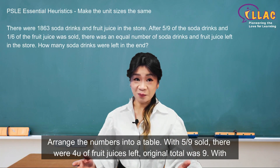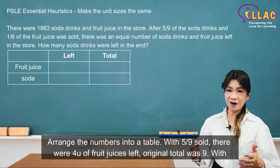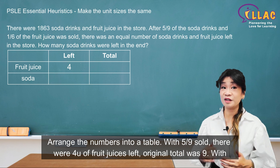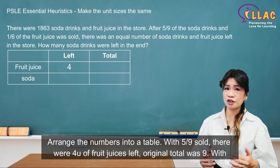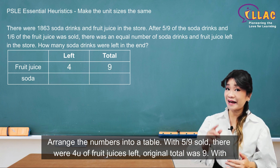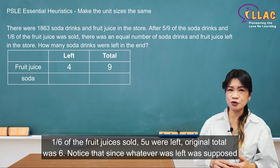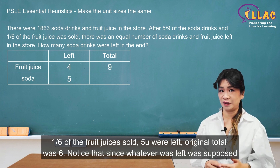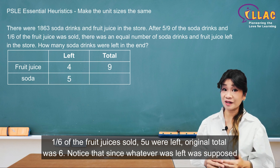Arrange the numbers into a table. With 5 over 9 sold, there were 4 units of soda drinks left, and the original total was 9. With 1 sixth of the fruit juices sold, 5 units were left, and the original total was 6.